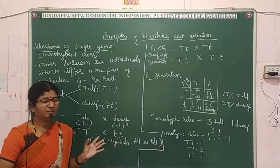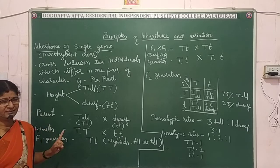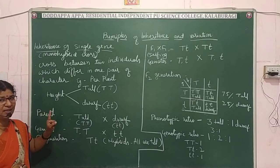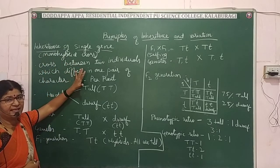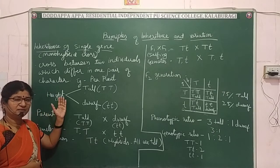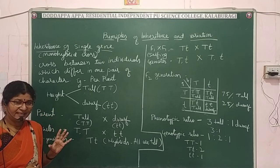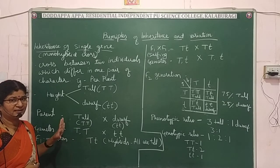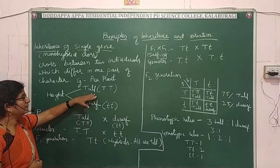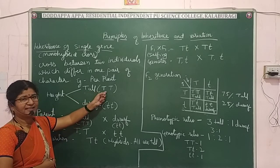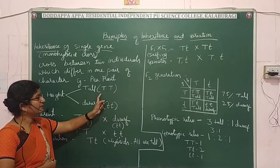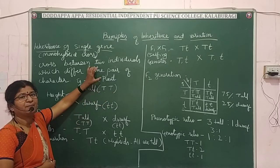Let me repeat: a monohybrid is a hybrid which differs in one character. A monohybrid cross involves two parents differing in one character — also called single gene inheritance, because you are considering only one gene controlling one character. Mendel considered all 7 characters, but here we consider one: height, with tall (TT) and dwarf (tt). Genes are written twice as the pea plant is diploid.